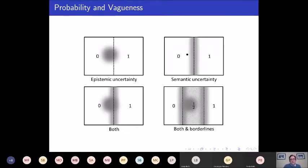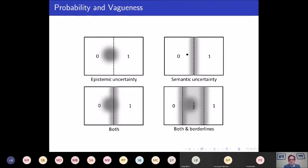I'm going to talk about probabilities defined over valuations. I may not always be explicitly clear about which of these types of uncertainty I'm talking about, but in specific cases it will be clear there is a reference to semantic uncertainty rather than epistemic. I'll try to point that out as I go along.